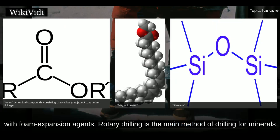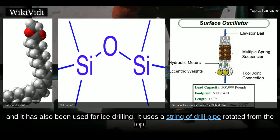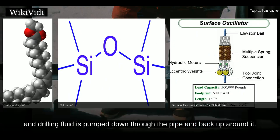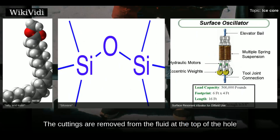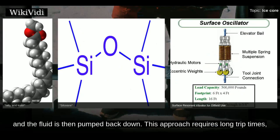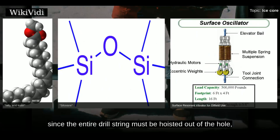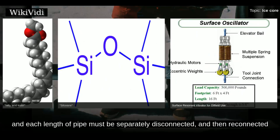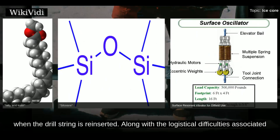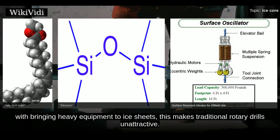Rotary drilling is the main method of drilling for minerals, and it has also been used for ice drilling. It uses a string of drill pipe rotated from the top, and drilling fluid is pumped down through the pipe and back up around it. The cuttings are removed from the fluid at the top of the hole, and the fluid is then pumped back down. This approach requires long trip times since the entire drill string must be hoisted out, making traditional rotary drills unattractive for ice coring.